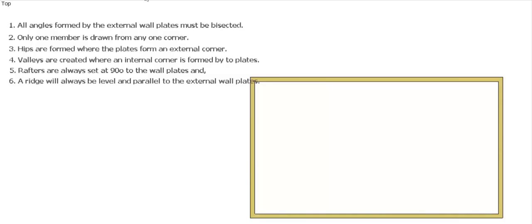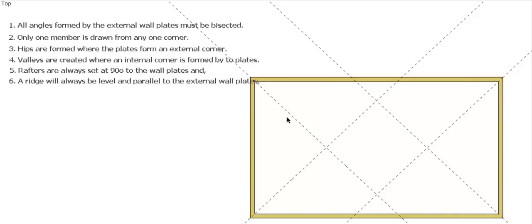The first thing we should do is go around our wall plates — our shape — and bisect all our corners. So draw all these dotted lines in and bisect the corners. For a 90-degree corner, this angle is going to be 45 degrees. The second rule: one member from each corner — one there, one there, one there, one there. Hips are formed where the plates form an external corner, so this will be a hip up to here and a hip down to here.